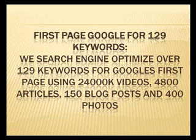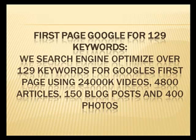We also include first page of Google ranking for 129 keywords. We search engine optimize over 129 keywords for Google's first page using 24,000 videos, 4,800 articles, 150 blog posts, and 400 photos.